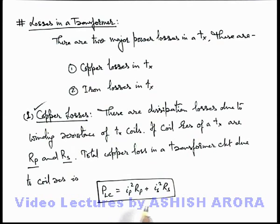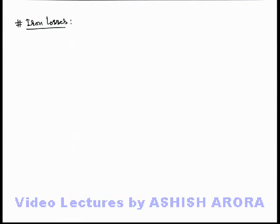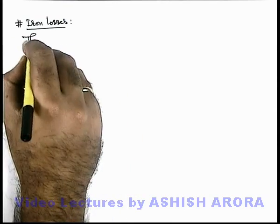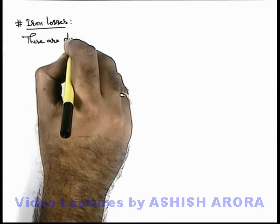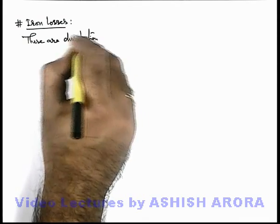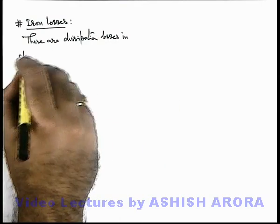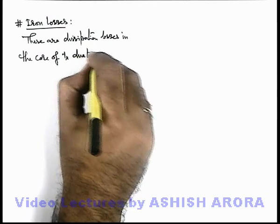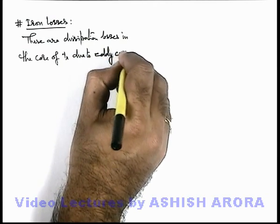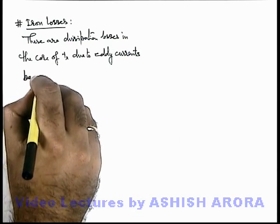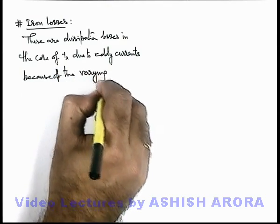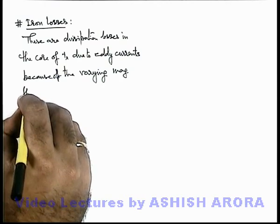Let's continue and study in detail about iron losses in a transformer. About iron losses we can write that these are dissipation losses in the core of the transformer due to eddy currents, because of time varying magnetic flux in the core.